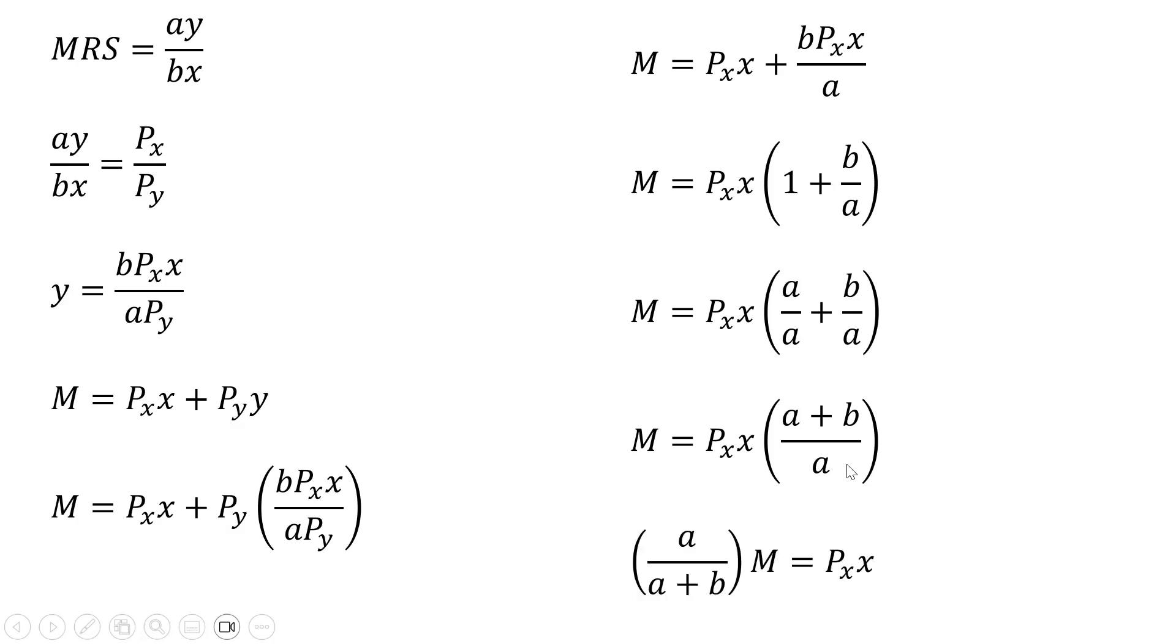Further simplifying, I multiply through by the reciprocal of (a+b)/a, which is a/(a+b). This tells us that the total amount spent on good x, which is Px*x, equals money income M multiplied by a/(a+b).